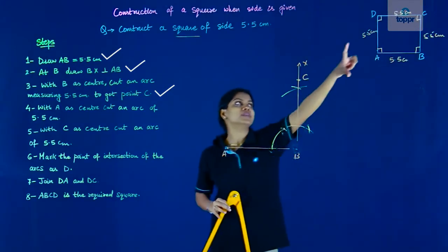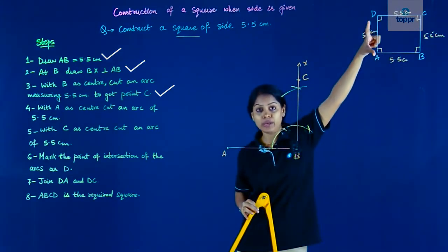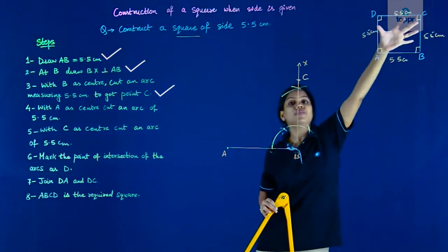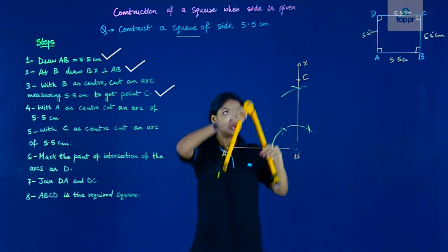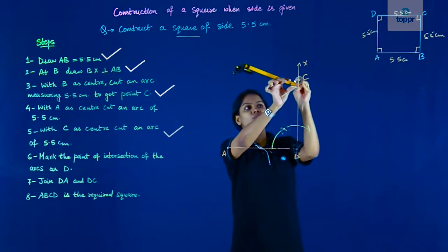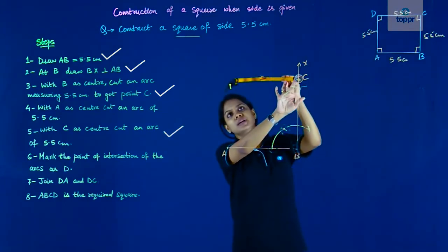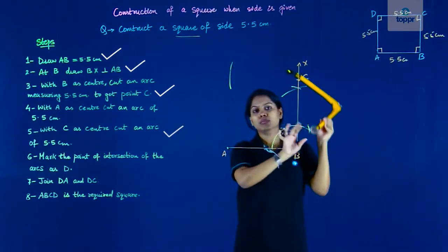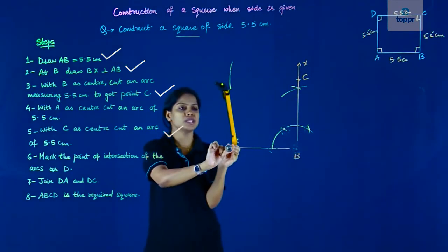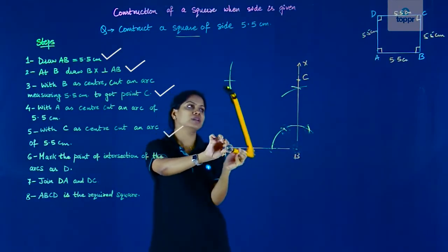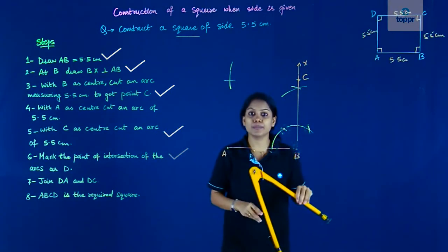Because D is at a distance of 5.5 from A and also at a distance of 5.5 from C. As simple as that. So the same 5.5 measure I'll place at C, cut an arc, move the compass, now place at A and cut another arc. So this point here is my point D.